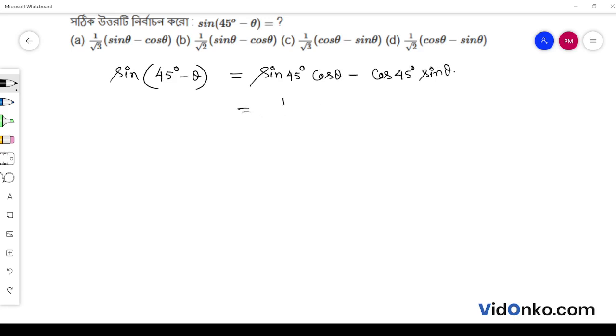So sin 45° means 1/√2 cos θ minus cos 45° which is 1/√2 sin θ.